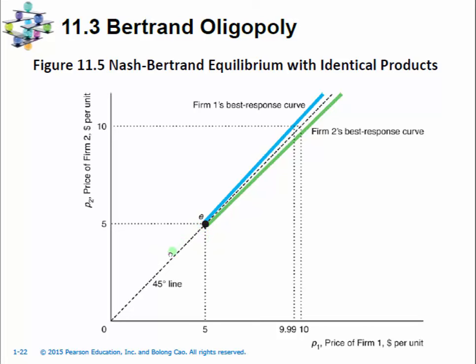Below $5, no firm will participate in this market. But at $5, they are breaking even, making zero economic profit, yet still covering all of their opportunity costs so they can make accounting profit and still supply in the market. Notice that this result — the price is at the marginal cost — is the same kind of outcome from a perfectly competitive market.